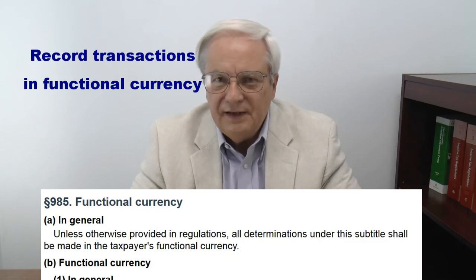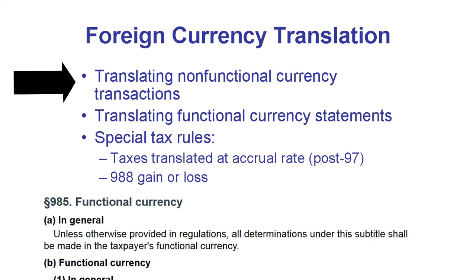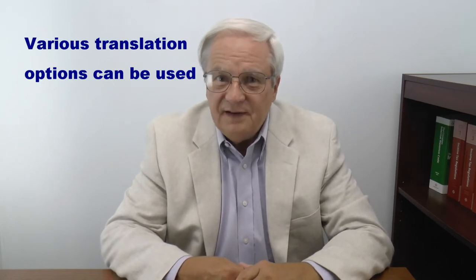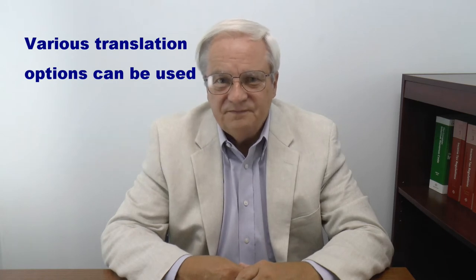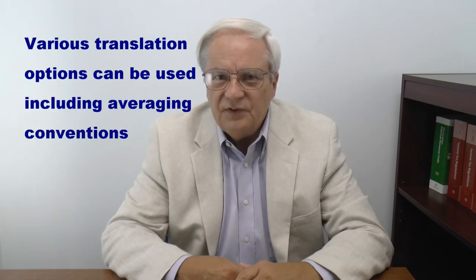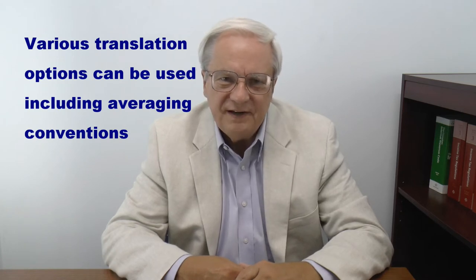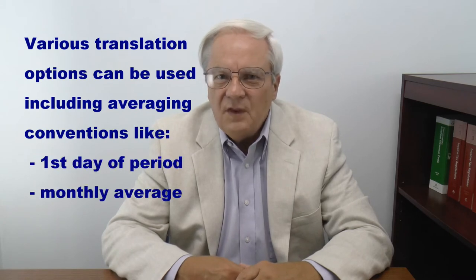Transactions must be recorded for books and for tax in the functional currency, which means you must translate the transaction to the functional currency. This translation can be done using the exact rate at the moment of the transaction, but that takes a lot of work. Book and tax rules allow using some sort of pricing or averaging convention for the rate used to translate transactions.